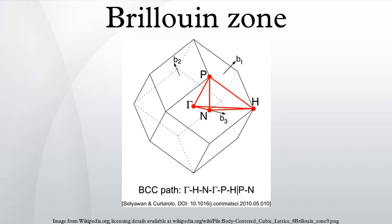In mathematics and solid-state physics, the first Brillouin zone is a uniquely defined primitive cell in reciprocal space. The boundaries of this cell are given by planes related to points on the reciprocal lattice. It is found by the same method as for the Wigner-Seitz cell in the Bravais lattice.